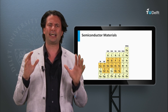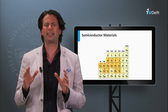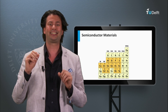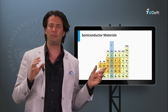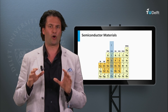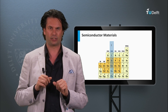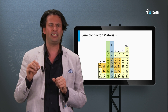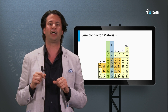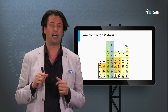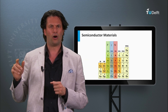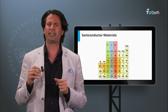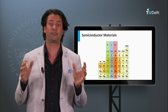As an example we take silicon again. Silicon is a material which has 4 valence electrons, and in the periodic table it belongs to the column with atoms having 4 valence electrons. To the left of this column we have materials with only 3 valence electrons, like boron, aluminum, and gallium. On the right side we have atoms with 5 valence electrons, like nitrogen and phosphorus.